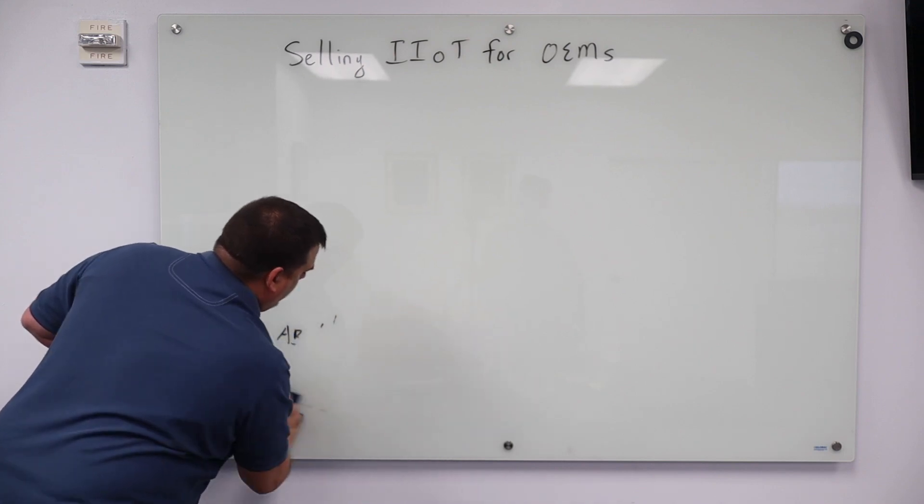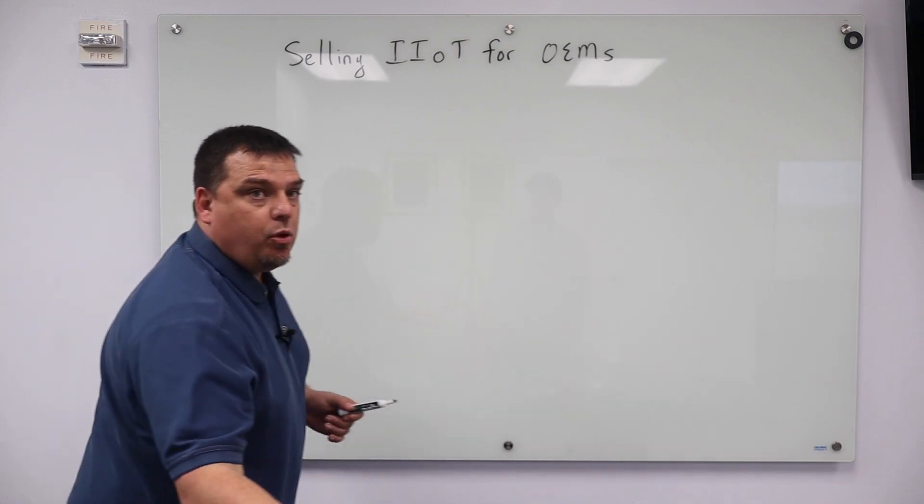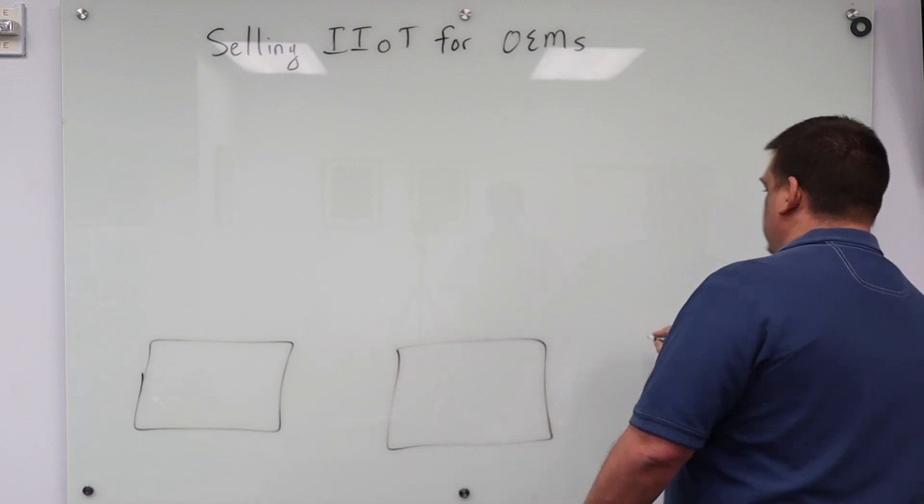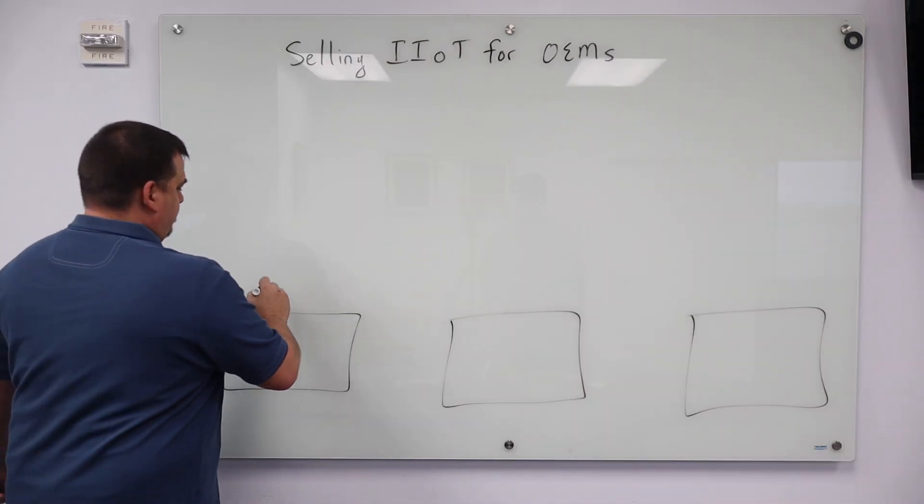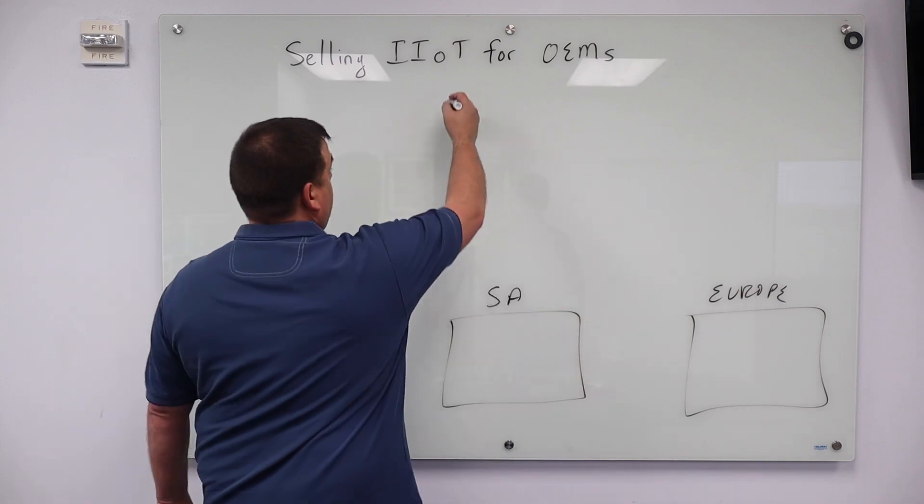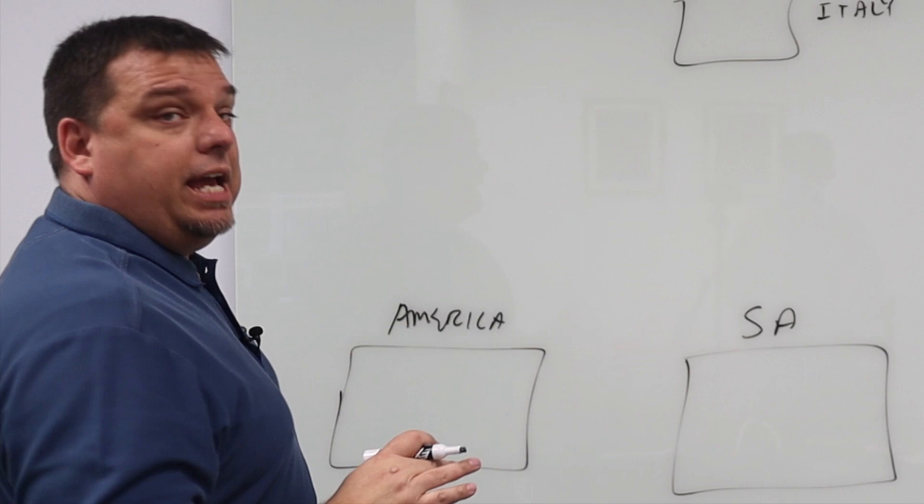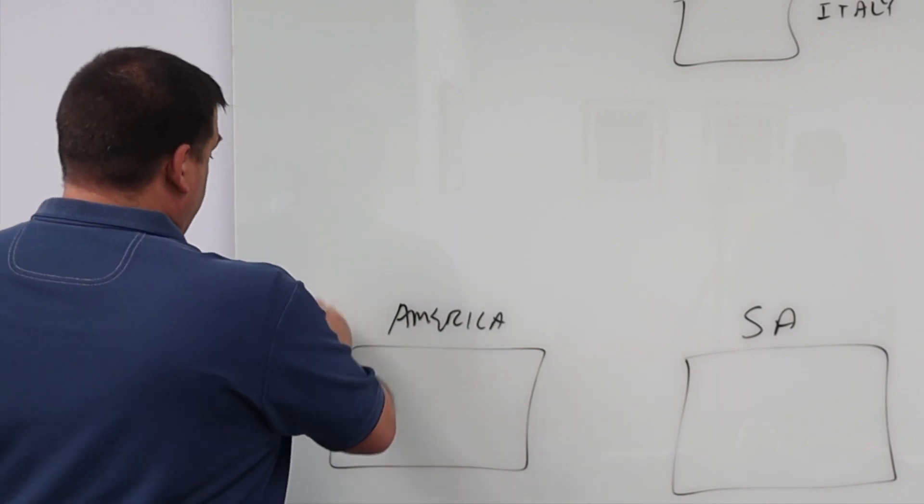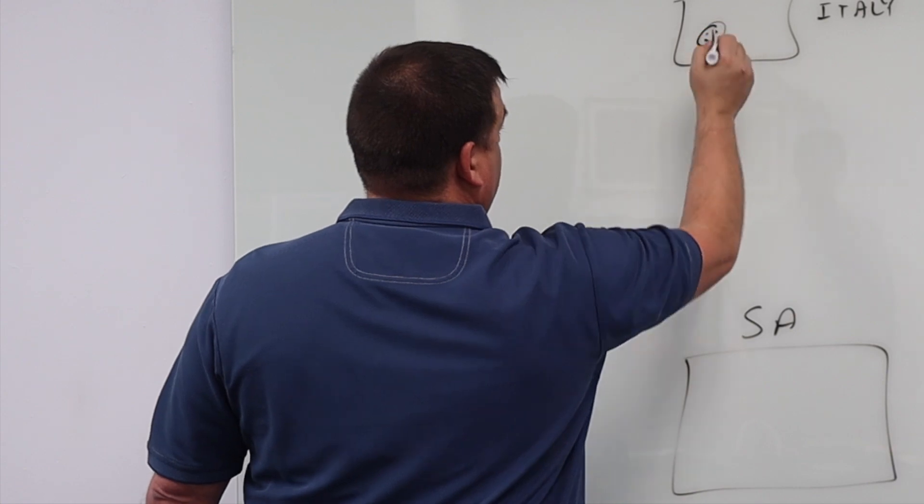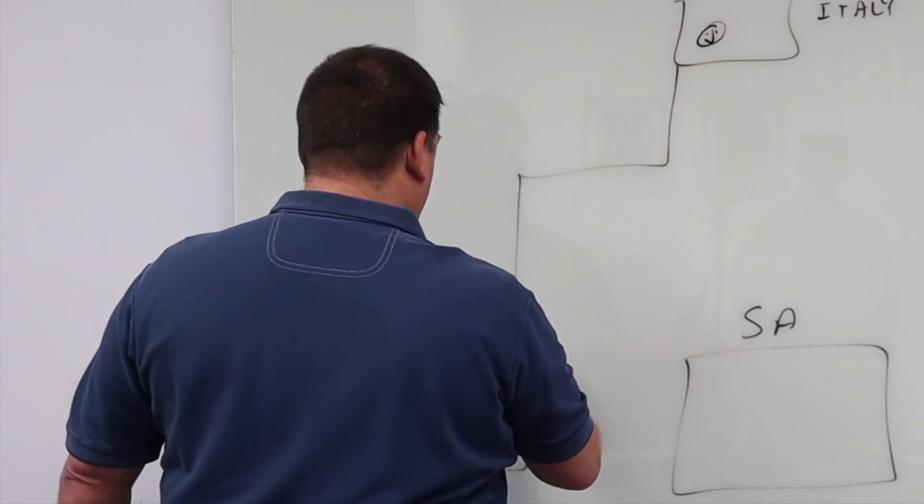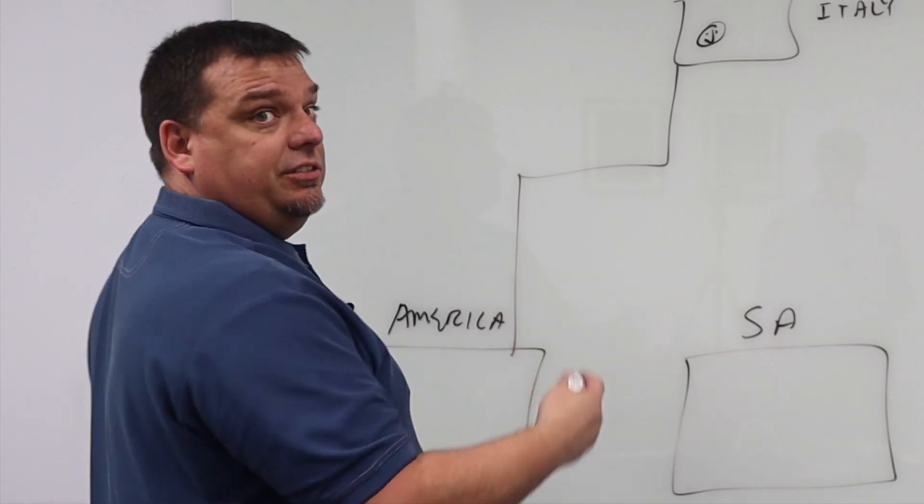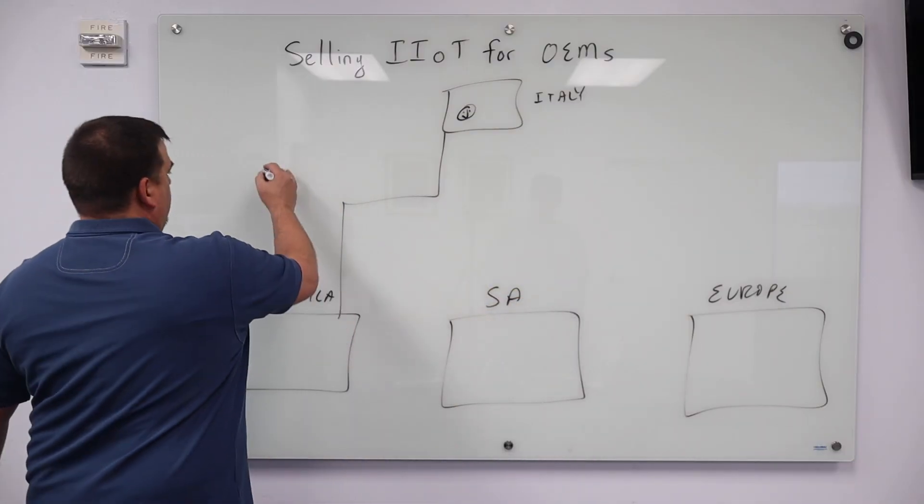What is the Industry 3.0 way of OEMs supporting their equipment? So I've got machines all over the world. Let's use this printing press concept as our example. I've got presses in the United States, in South America, and in Europe. And I have one central service desk located in Italy. So right now, the current way that this is done is the customer in America has a problem, and they make a phone call to Italy. Italy, the technician, he's probably got a frown on his face, what he does is he remotes into the piece of machinery in the United States after responding to this phone call, and he tries to solve the problem, reactively. Same thing with South America and Europe. So this is our 3.0 example.